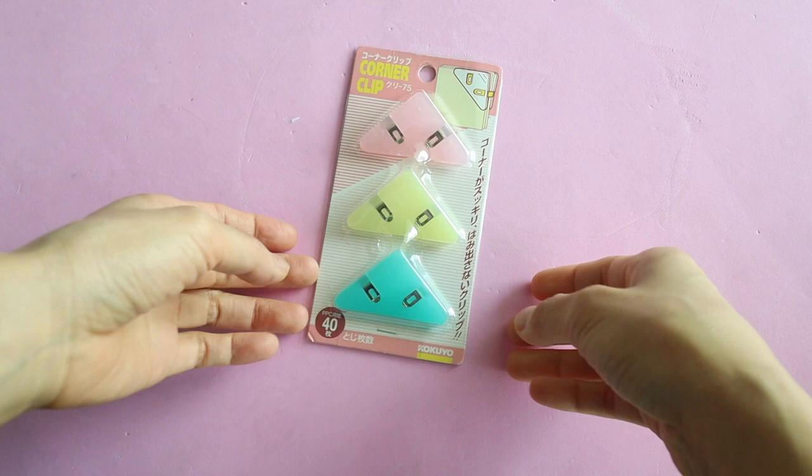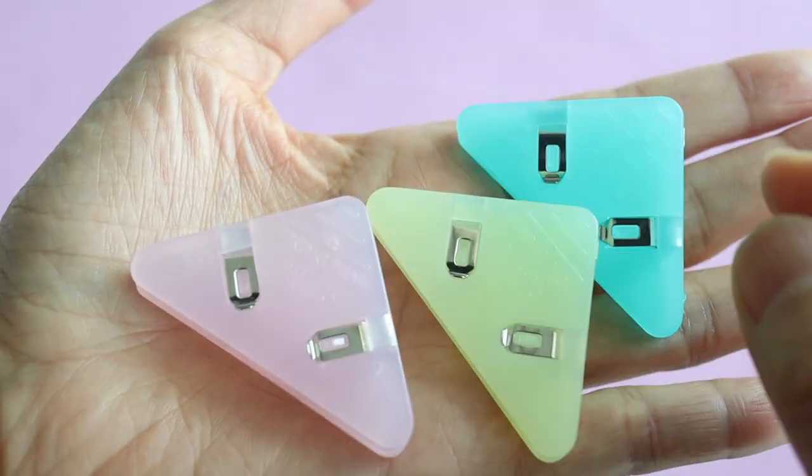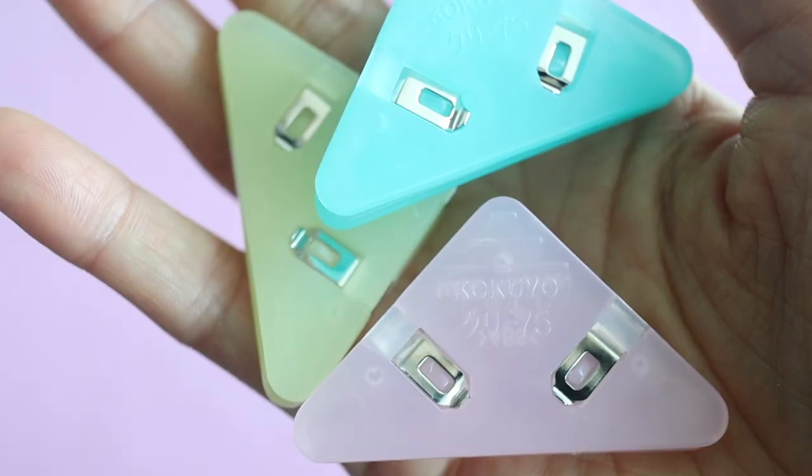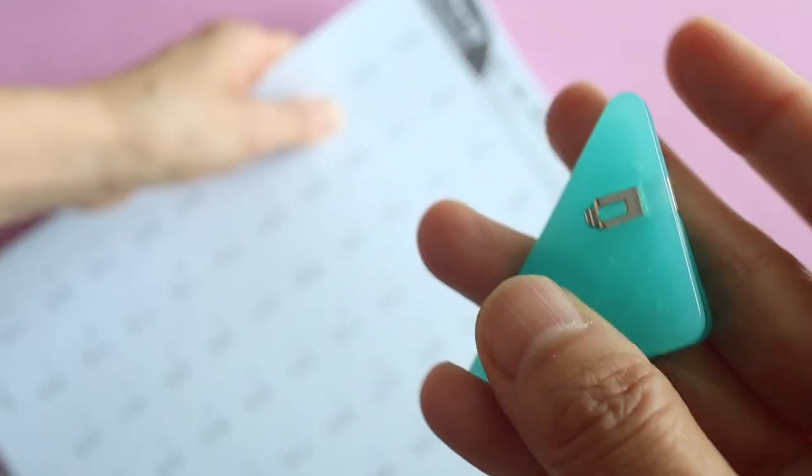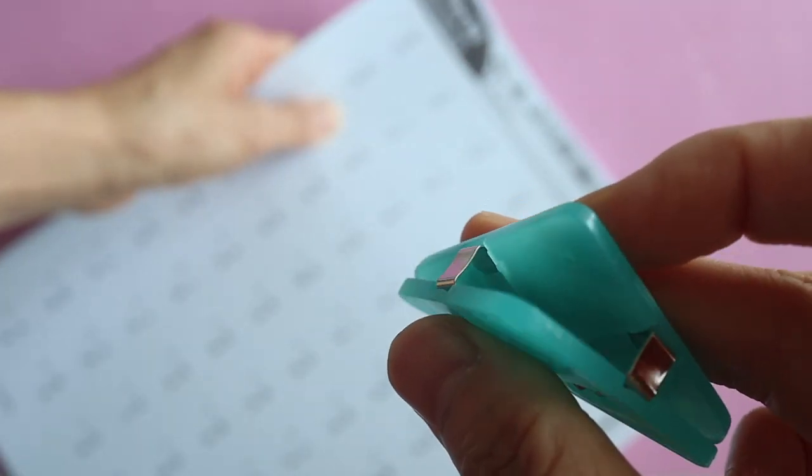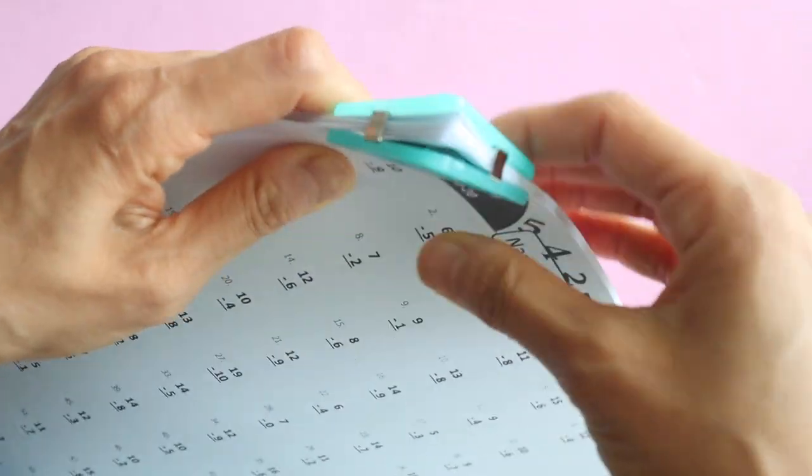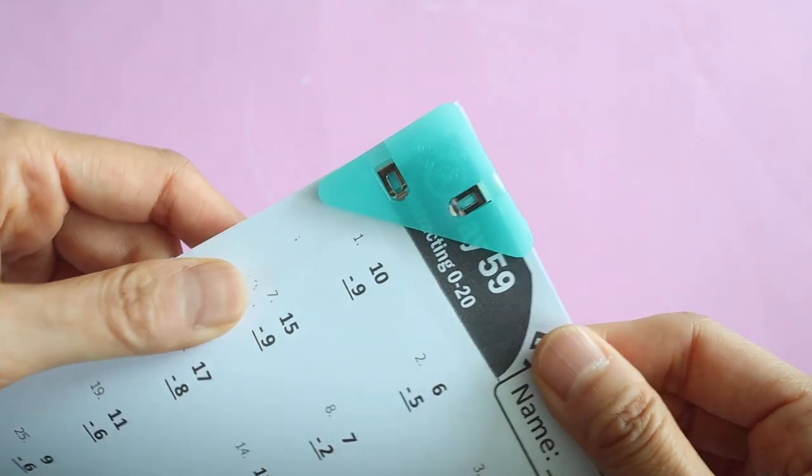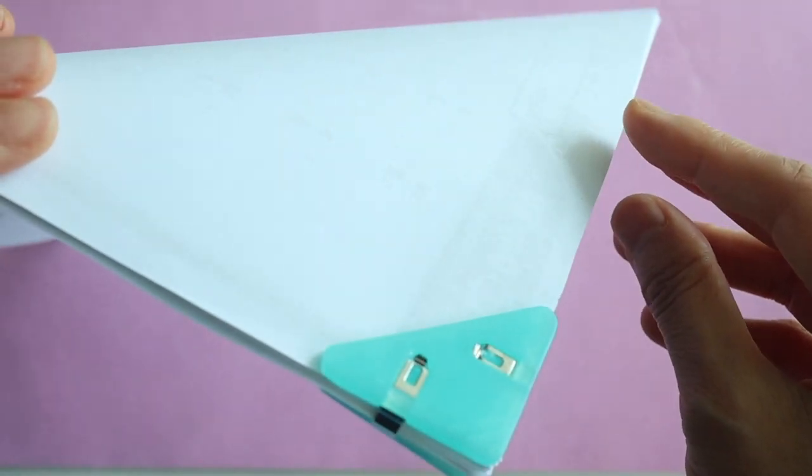These are the Kokuyo corner paper clips. Kokuyo makes a lot of cool products including the stapless stapler. So I decided to check out these little paper clips. They can hold up to 40 sheets of paper and they're actually quite strong. So they work really nicely to hold together a stack of paper without damaging any of the paper. And they're much nicer than binder clips. They don't stick out as much and they don't rip the paper.